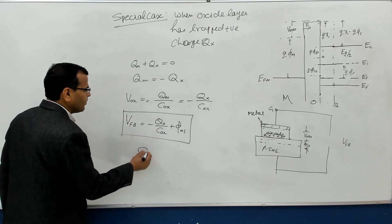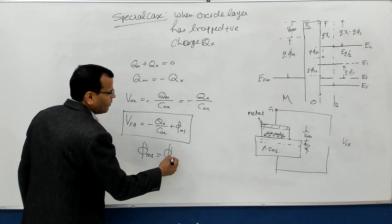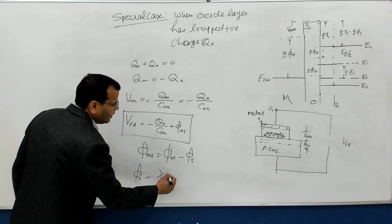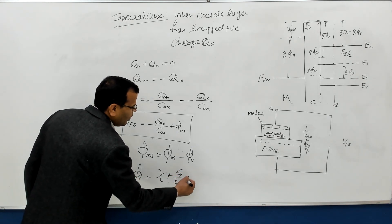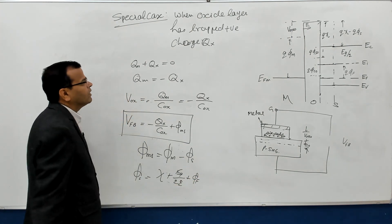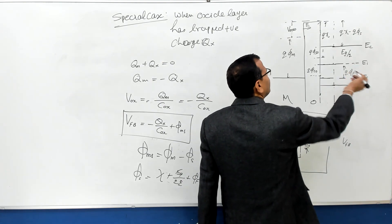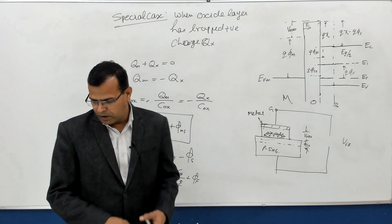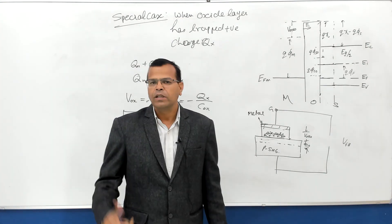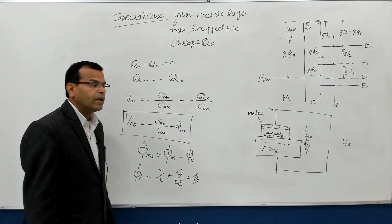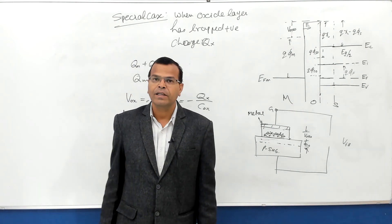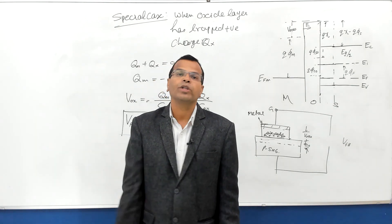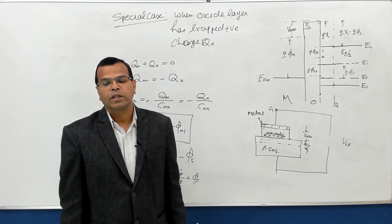φMS is the work function of metal minus the work function of semiconductor. φS is the electron affinity plus half the band gap divided by q, plus φF. φF is the difference between the intrinsic Fermi level and the actual Fermi level on the semiconductor side. This is all about the flat band voltage. In my next video, I will be taking the next very important topic — the threshold voltage of the MOS capacitor. Thank you for watching.